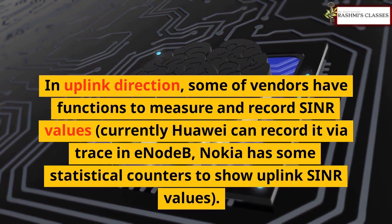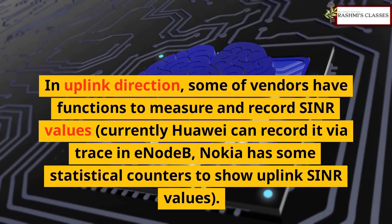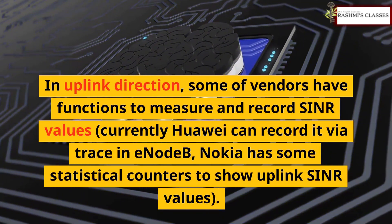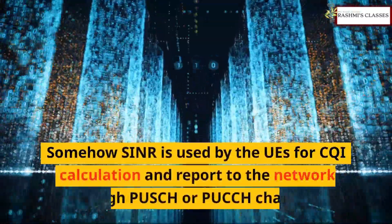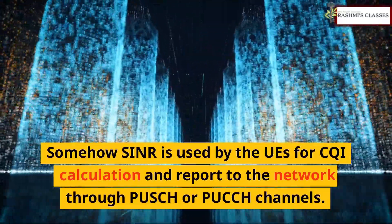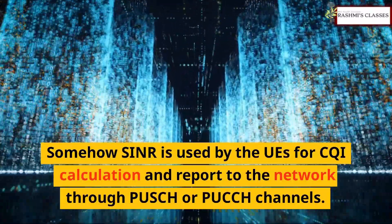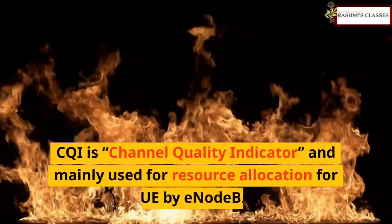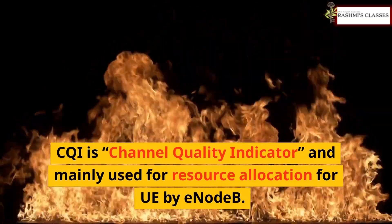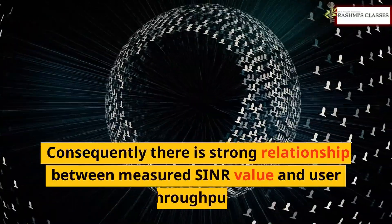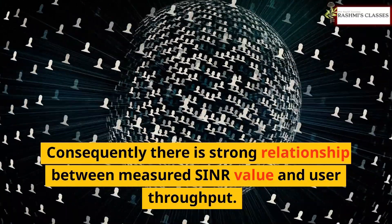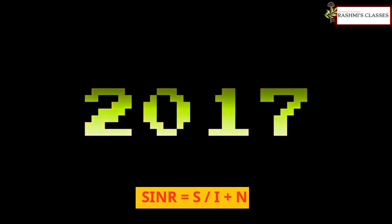In the uplink direction, some vendors have functions to measure and record SINR values. Currently Huawei can record it via trace in eNodeB, and Nokia has some statistical counters to show uplink SINR values. SINR is used by UEs for CQI calculation and is reported to the network through PUSCH or PUCCH channels. CQI — Channel Quality Indicator — is mainly used for resource allocation for UEs by the eNodeB.